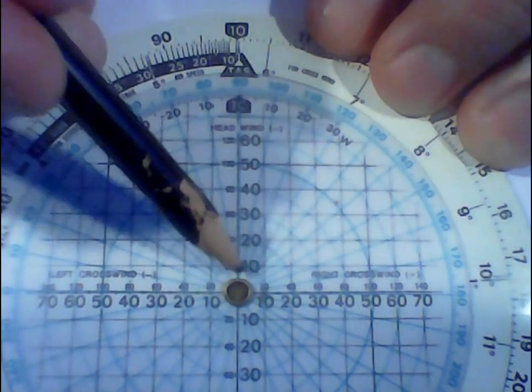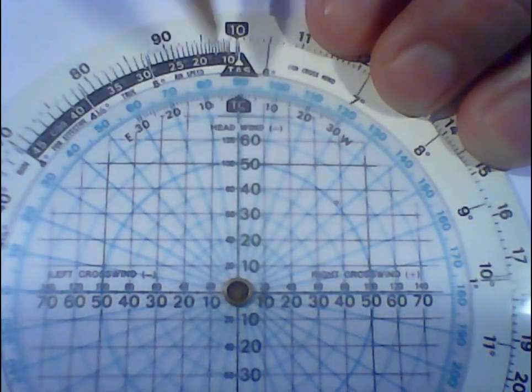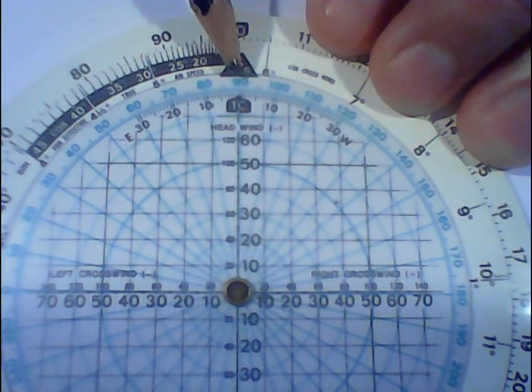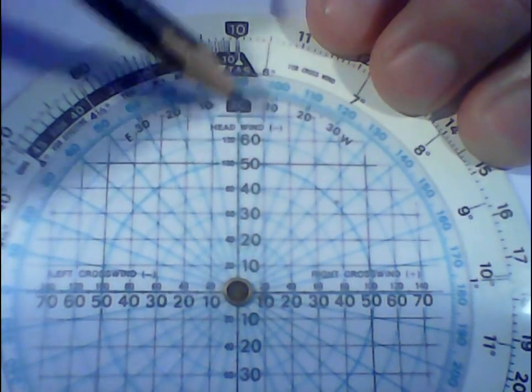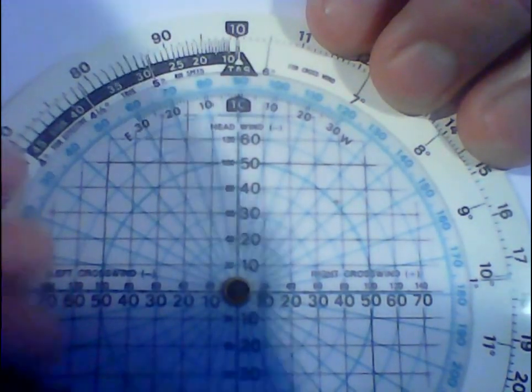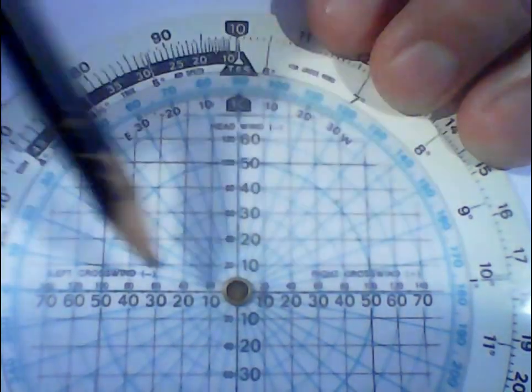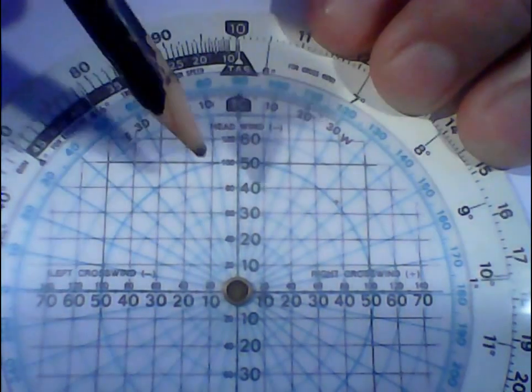Then what you do, this scale here, if I'm heading directly into 090, then that's going to be a headwind. Now this here represents headwind, this represents tailwind, and that's wind from your right, wind from your left.